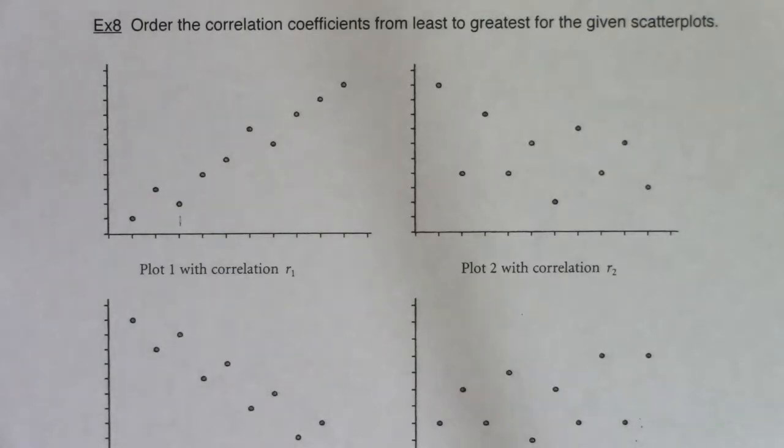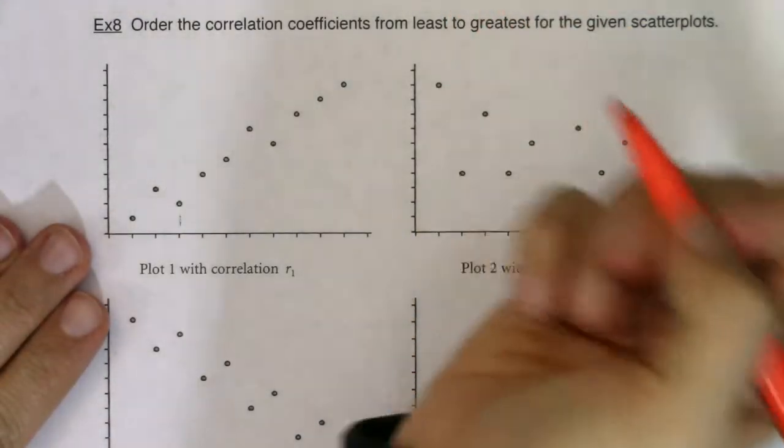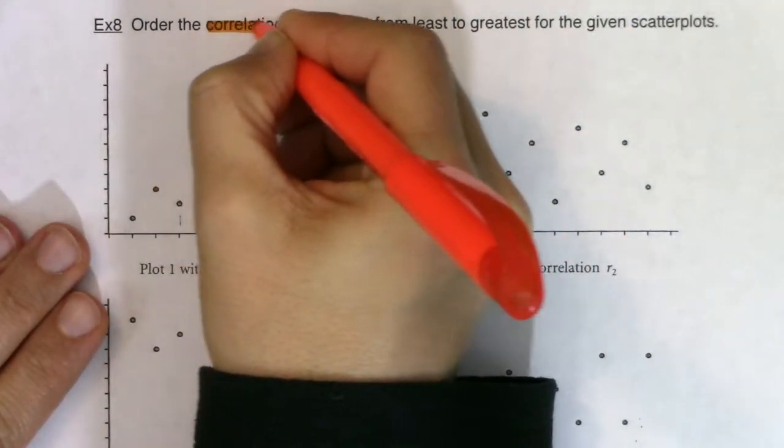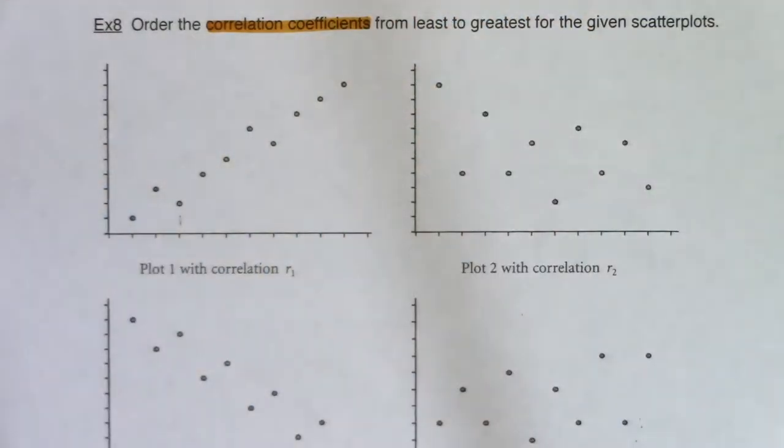All right, so let's take a look at example eight. It says order the correlation coefficients from least to greatest for the given scatter plots. So whenever I see correlation coefficient, I think R. I got to figure out these R values that are in here.